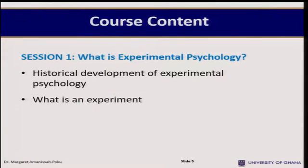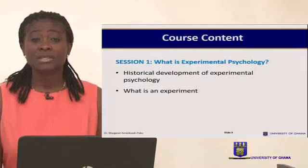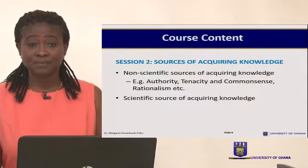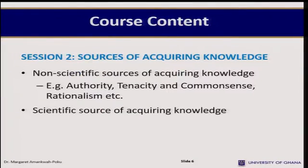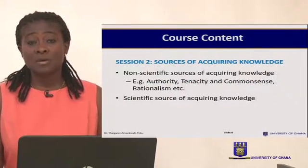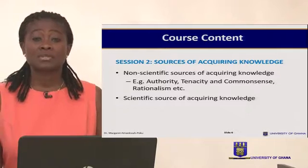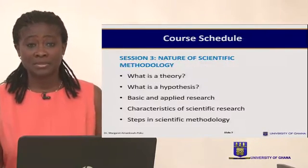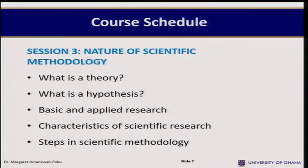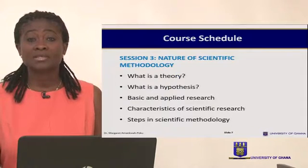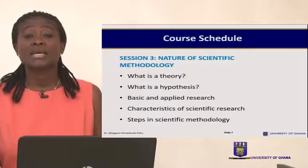For Session 1, I'll start by talking about what experimental psychology is, giving a brief history of how this field developed, and what an experiment is. In Session 2, I'll talk about sources of acquiring knowledge — there are several ways, but psychologists rely on one in particular — focusing on the scientific method. For Session 3, I'll cover the nature of scientific methodology: what a theory is, what a hypothesis is, the distinction between basic and applied science, the characteristics of the scientific method, and the steps used in scientific methodology.